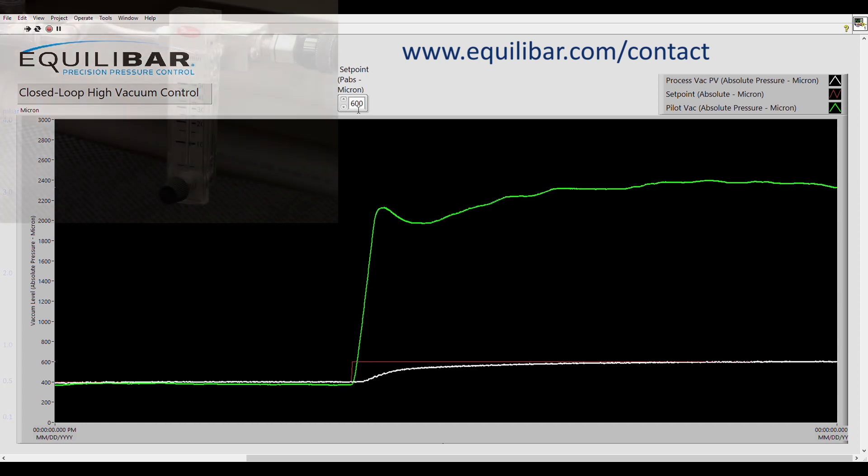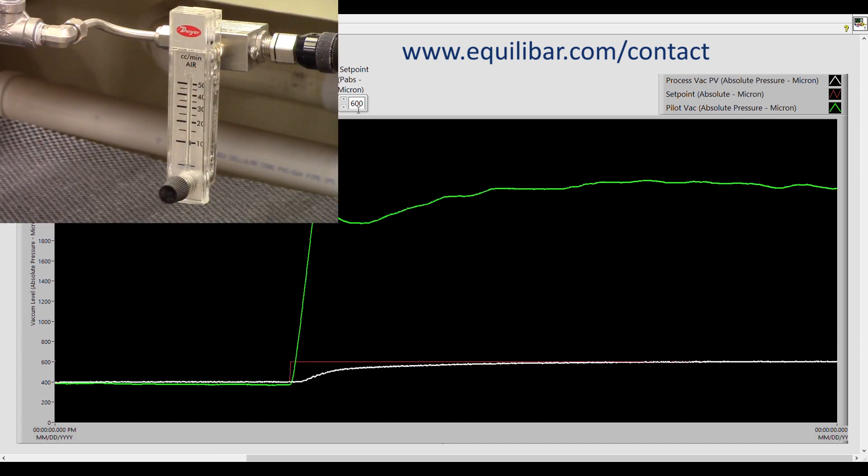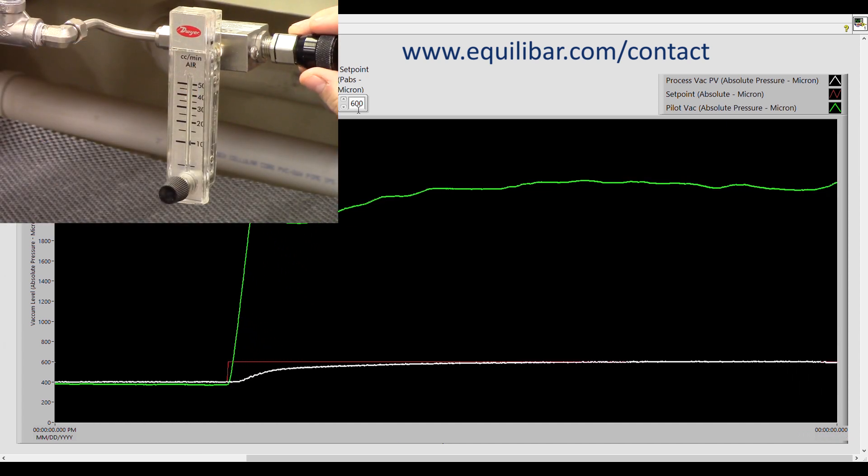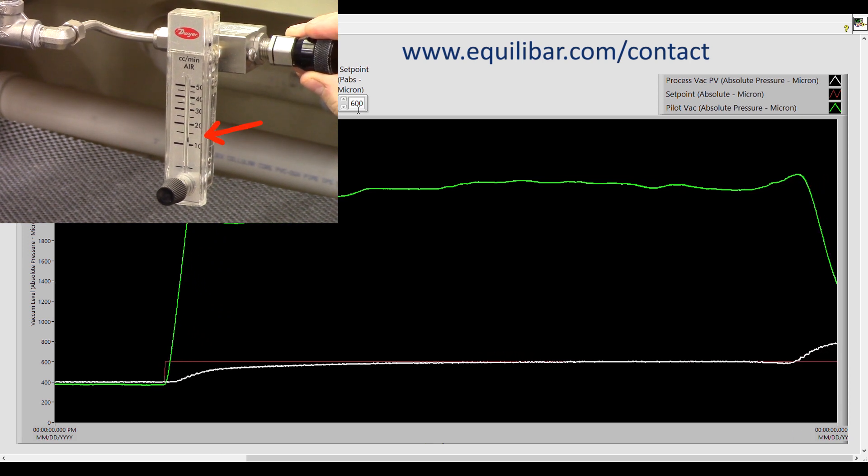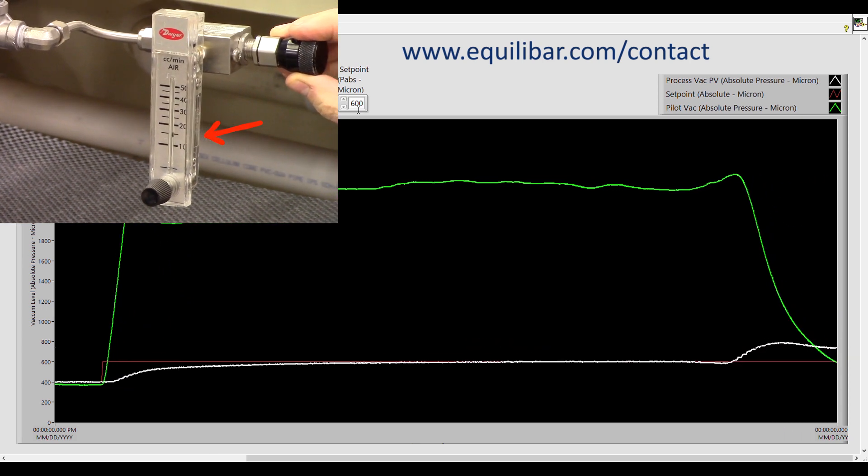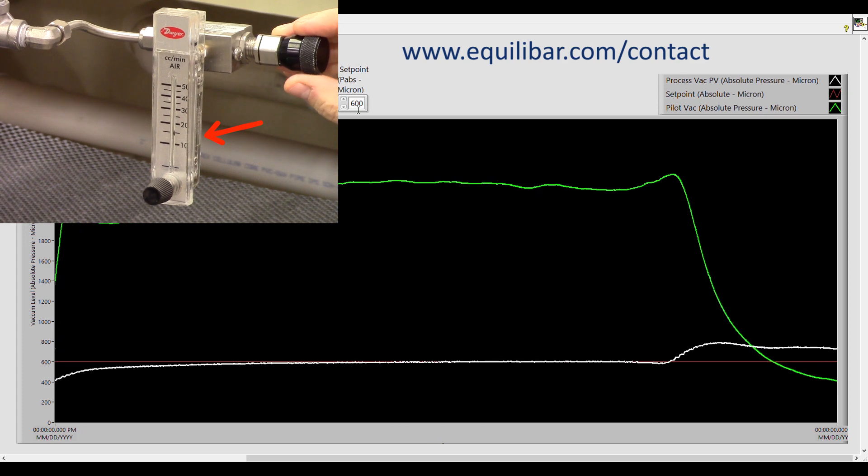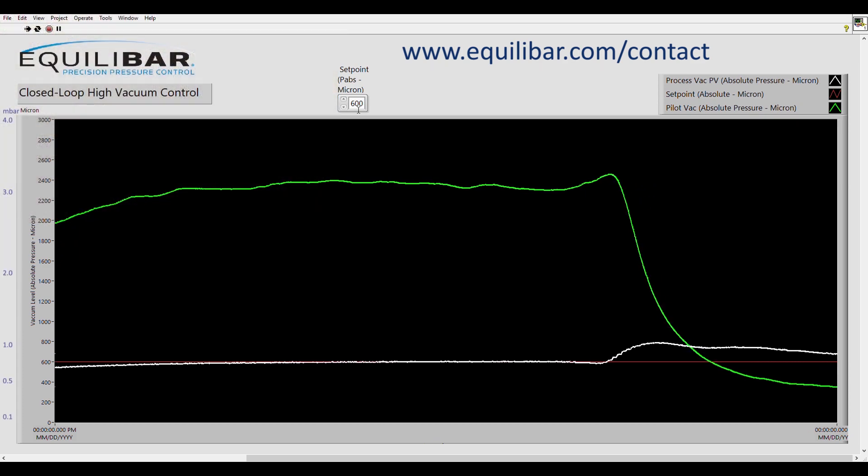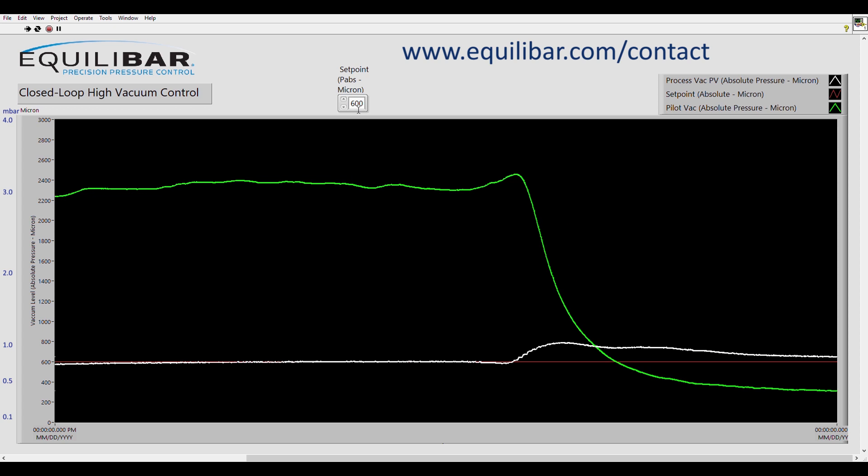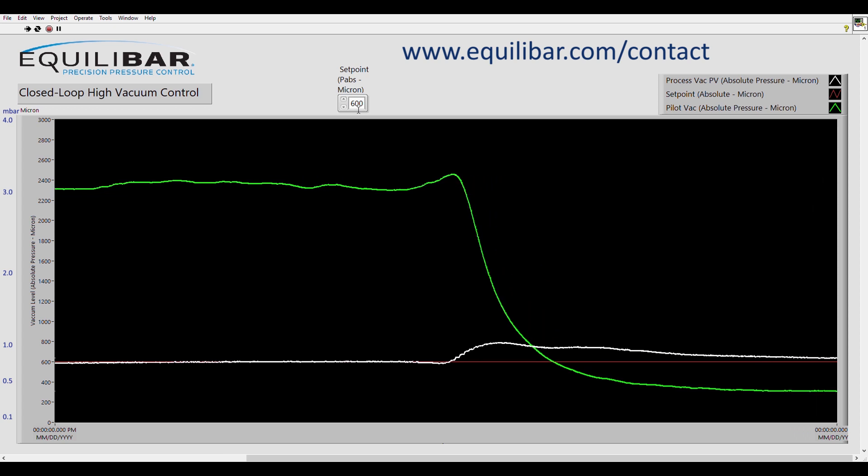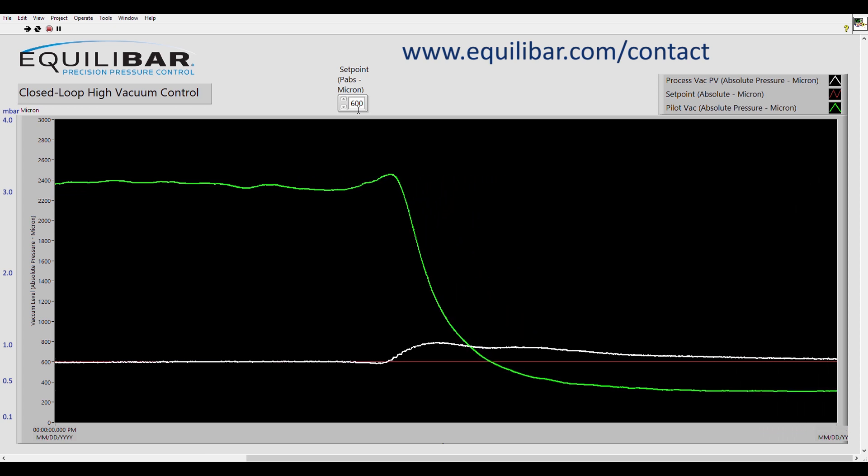Now let's vary the mass flow coming into the process. By increasing the mass flow from about 10 to about 14, we see how the closed loop process responds to process variations. The PID adjusts the pilot pressure again to keep the process under control.